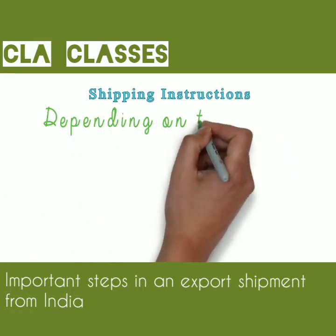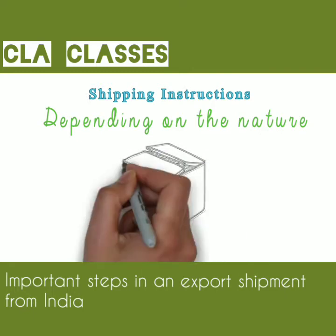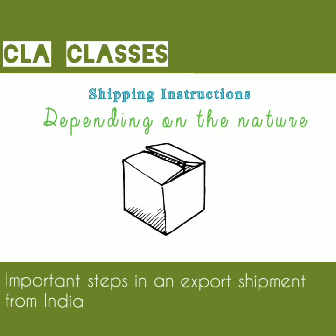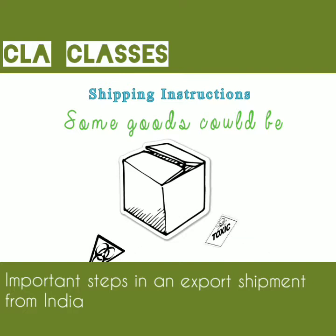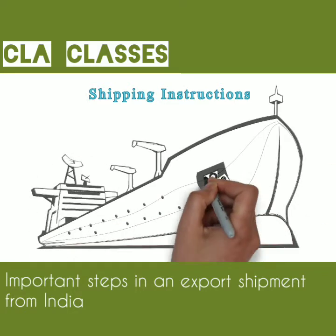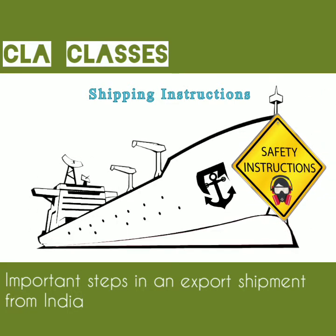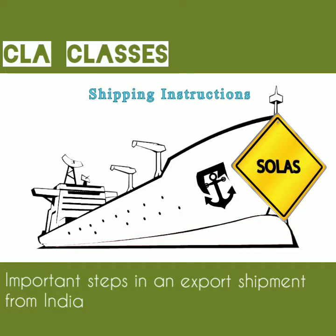Shipping Instructions: Depending on the nature of the goods, they have to be shipped under specific instructions. Some goods could be perishable, flammable, corrosive, biohazardous, toxic, pathogenic, or allergenic. So they have to be shipped under appropriate safety instructions as per various international conventions like IMSBC, IATA, FIATA, SOLAS, etc.